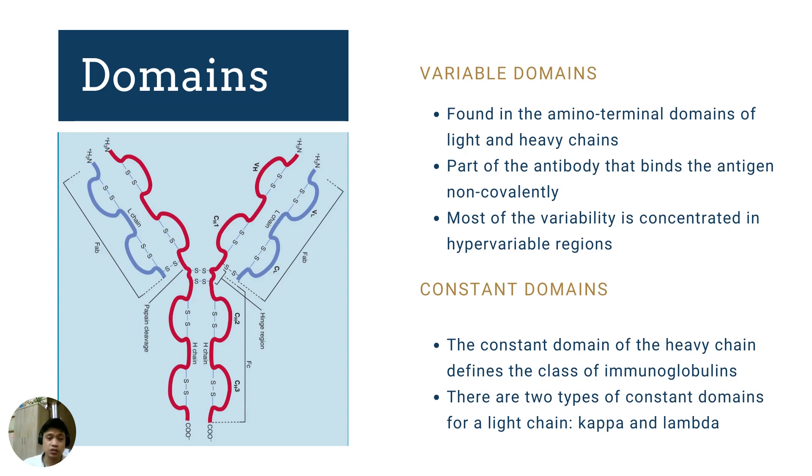Antibodies have domains. When we talk of domains, we are focusing our attention on the arm of the Y structure of the antibody. The first domain is the variable domain, and this is found in the amino terminal of light and heavy chains, which means the distal portion of the polypeptide. Variable domains are parts of the antibody that binds the antigen non-covalently. So this variable domain is what interacts with the antigen. Most of the variability is concentrated in hyper-variable regions. You might surmise that there are different types of antigens, and the specificity, the uniqueness of the antibody in binding these antigens is concentrated, focused on the variable domain, particularly the hyper-variable region.